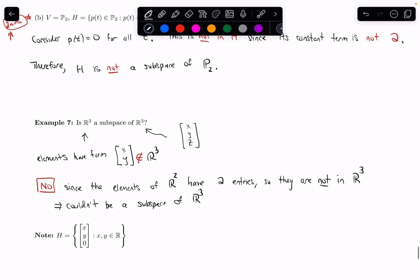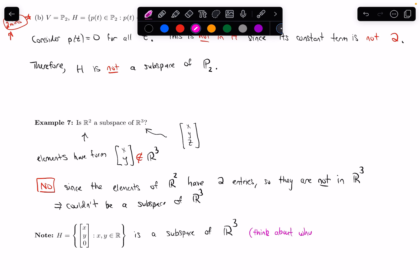However, consider the set of vectors of the form (x, y, 0) where x and y are any real numbers. This set does include a third entry (set to zero), and it would be a subspace of ℝ³ — in fact, it represents the XY-plane within ℝ³. Proving this is left as an exercise.